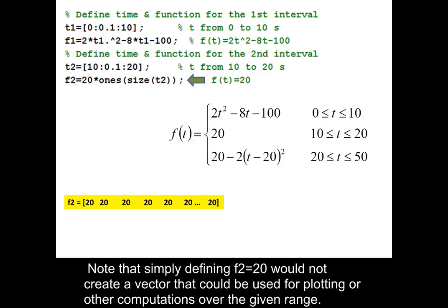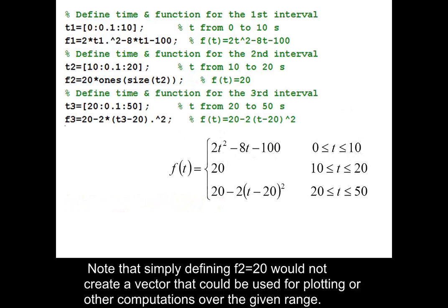Note that simply defining F2 is equal to 20 would not create a vector that could be used for plotting or other computations over the given range.